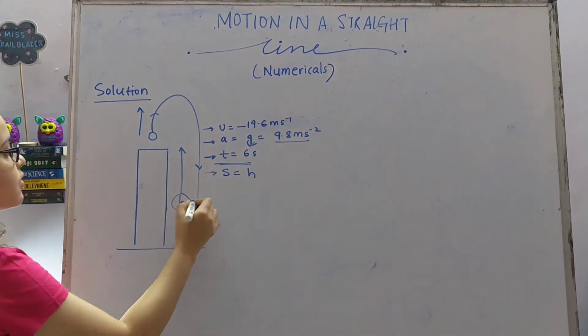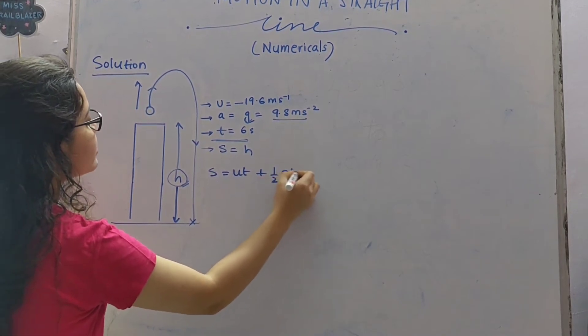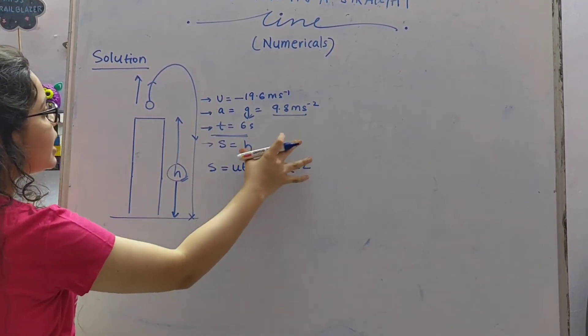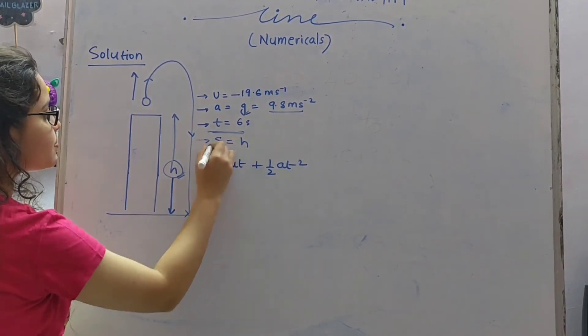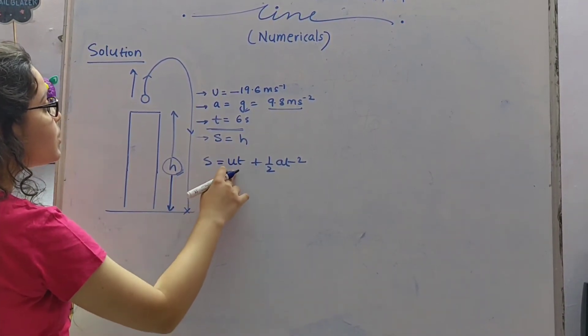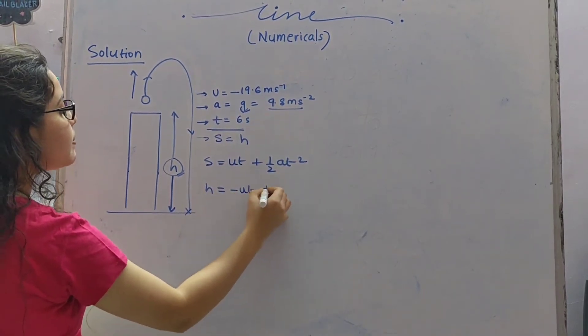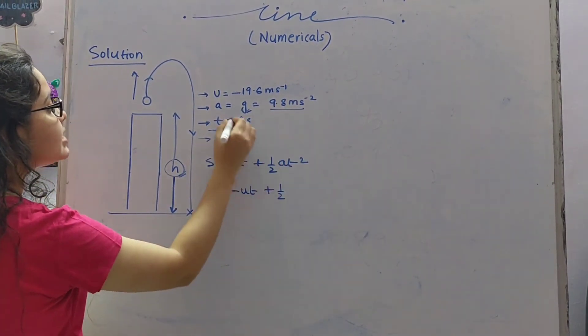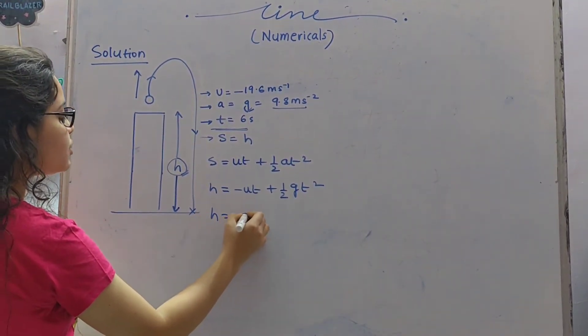So we know from the second equation of motion that s equal to ut plus half at square. Just try to analyze this and put it in this equation. So we get h equal to u is minus, so minus ut plus half, a is nothing but g, so gt square. Now let us substitute the value.